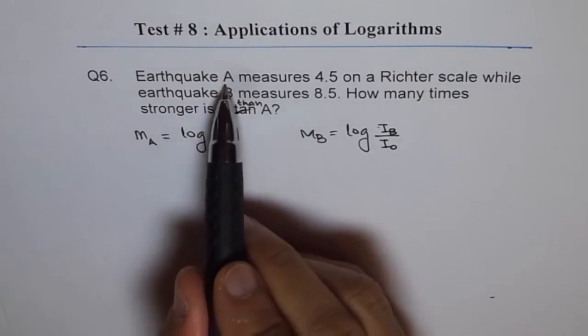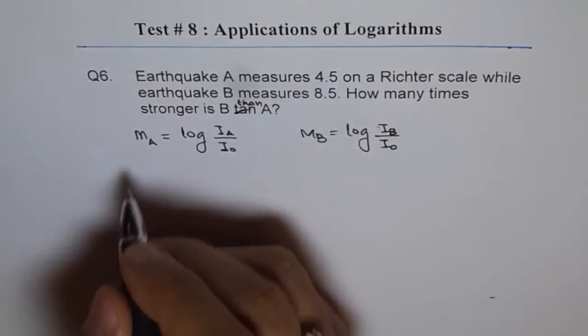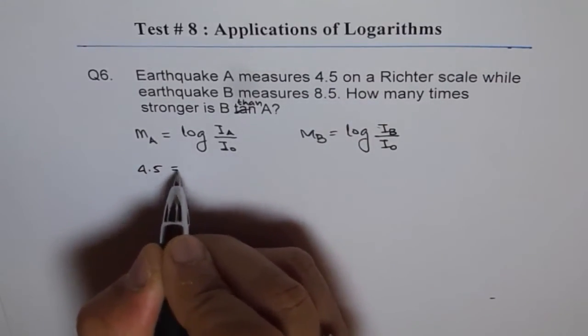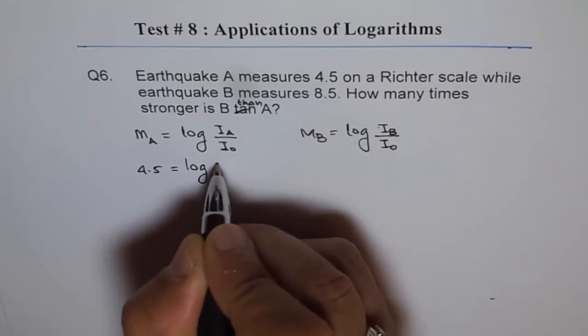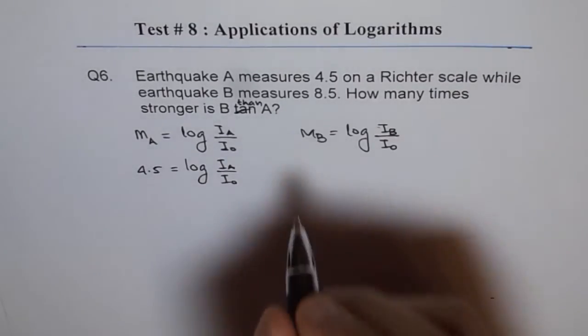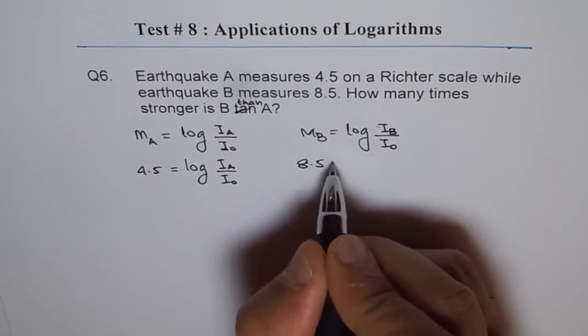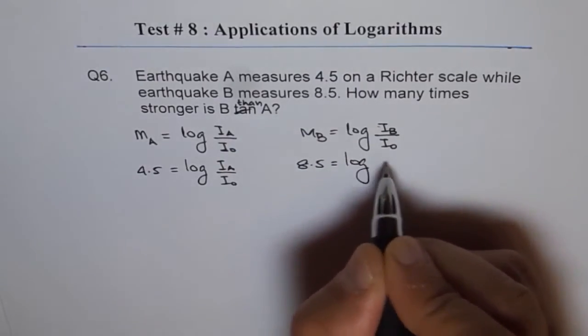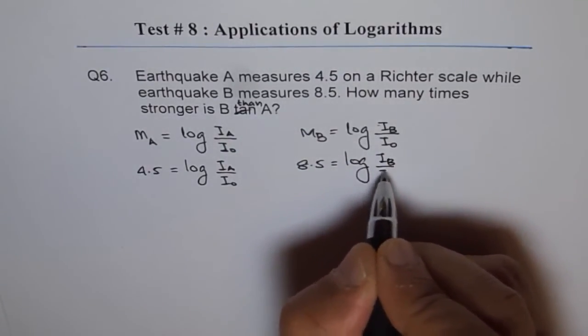Now, it says earthquake A measures 4.5 on Richter scale, so it is 4.5 equals to log of I A over I0. And B is 8.5, so 8.5 equals to log of I B over I0.